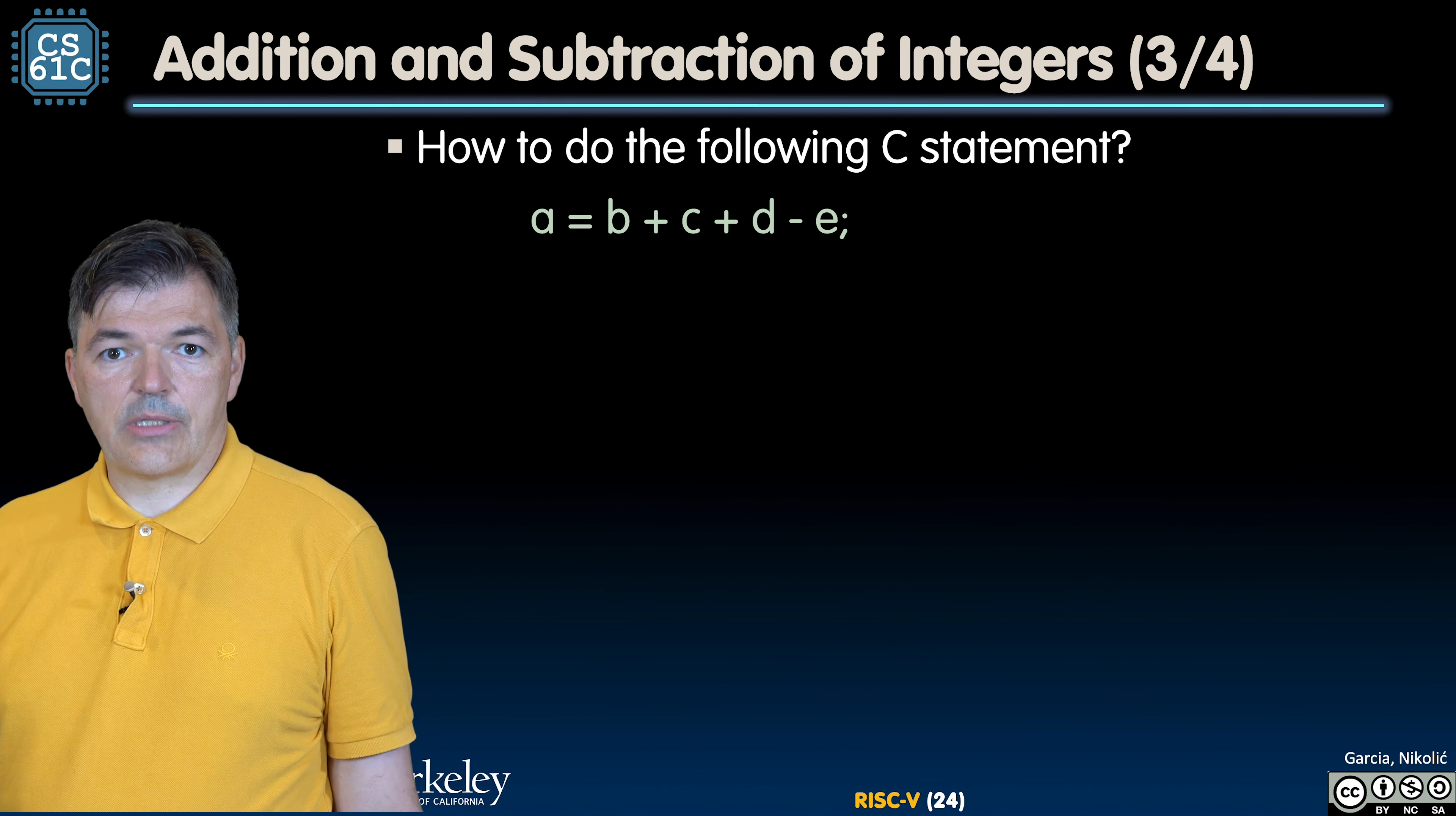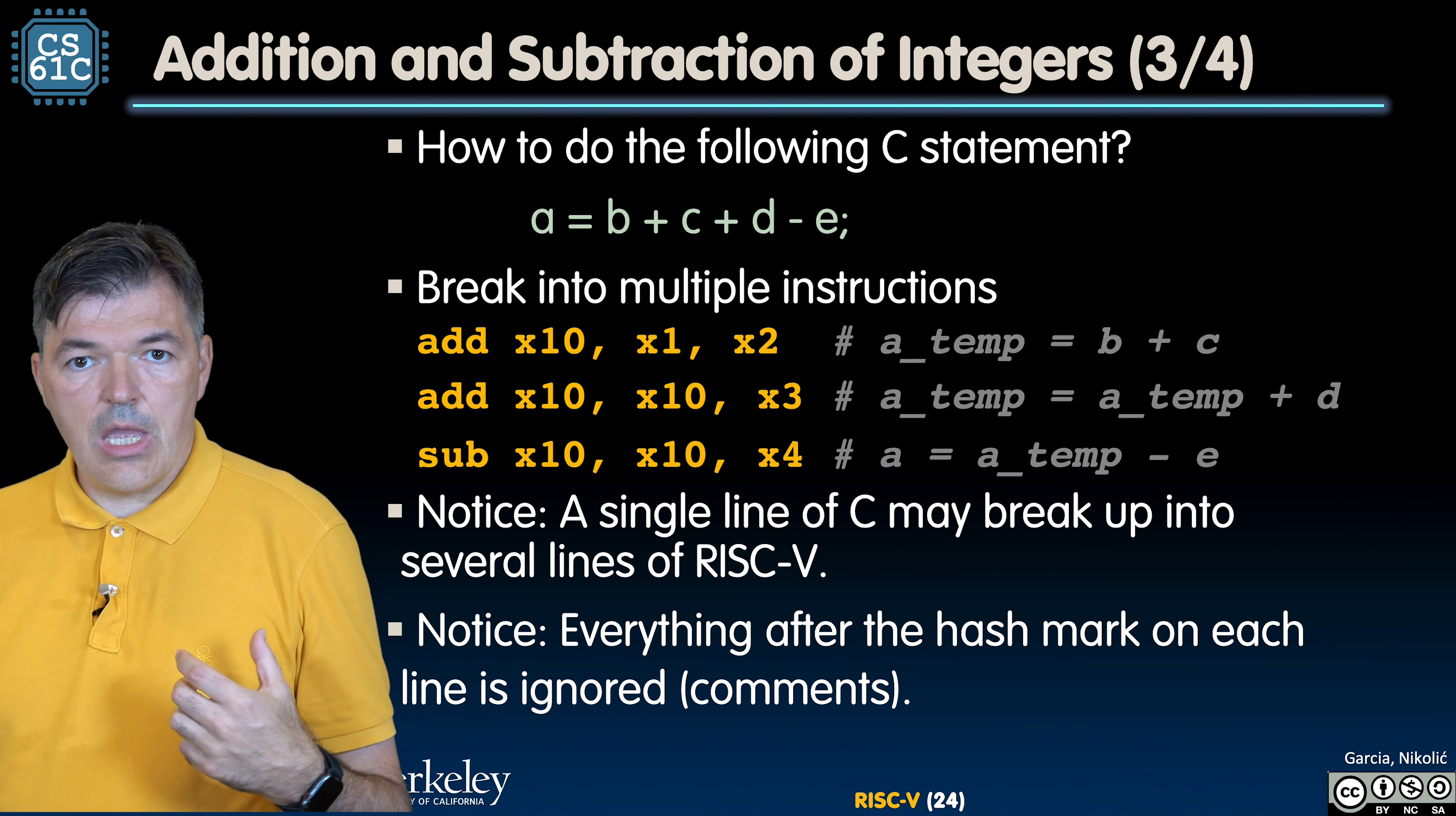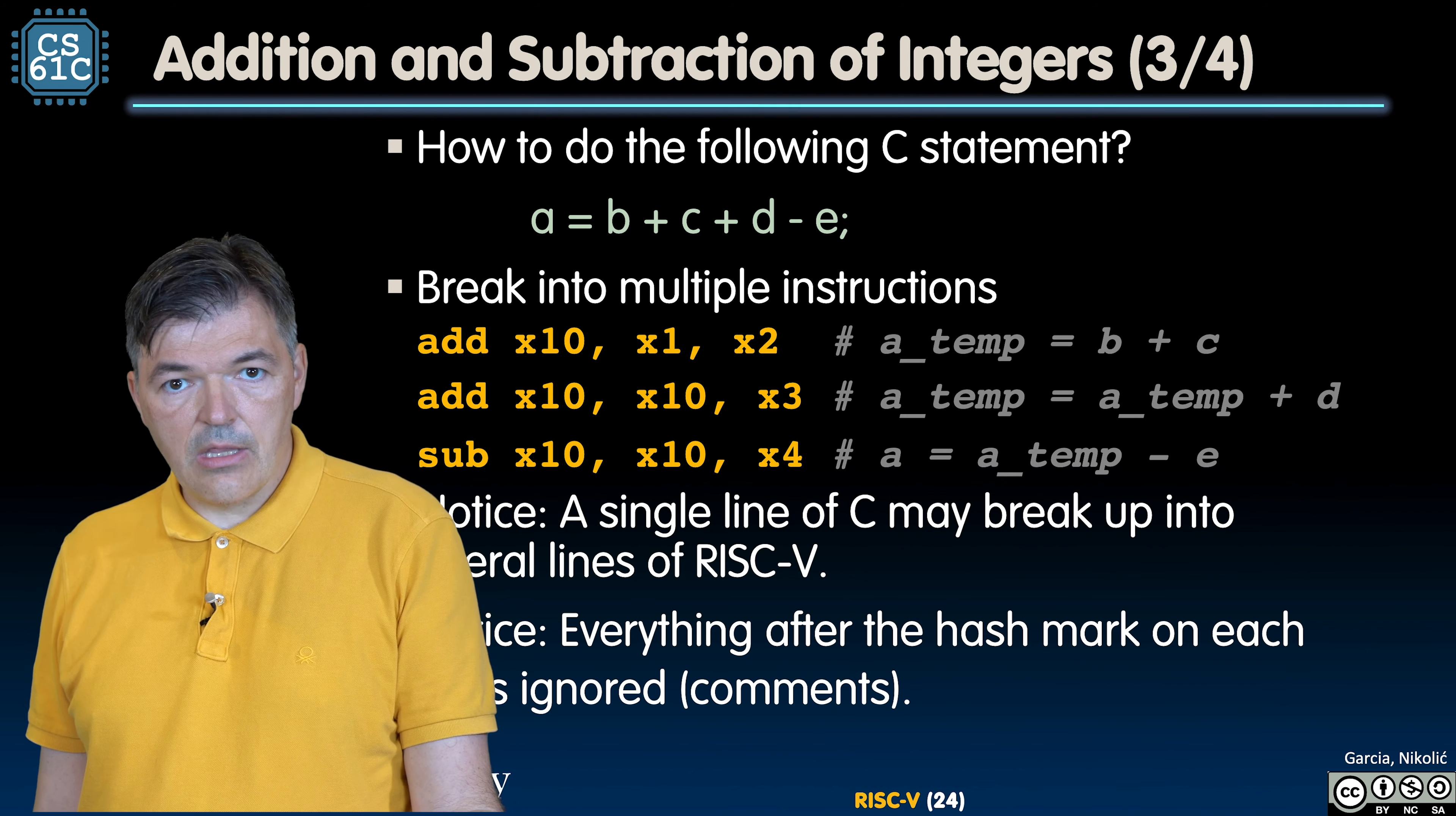How do we do more complex arithmetic operations? For example, if you have only two registers where you can store sources, how do we do addition and subtraction of four different operands? We have to use some temporary variables. Here is an example of how we would do A = B + C + D - E. We would break it up into multiple instructions, so one C command gets broken up into multiple. We would use x10 as a running sum where we would be accumulating the results. We would add the values of x1 and x2, where the values B and C are stored, and store it in x10. Then we would add the value of x3 to that temporary running sum stored in x10. Finally, we'll subtract x4 from that value stored in register x10, store it back in register x10, and that is our final answer.